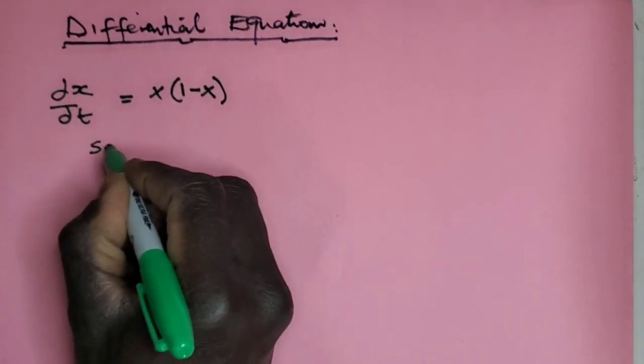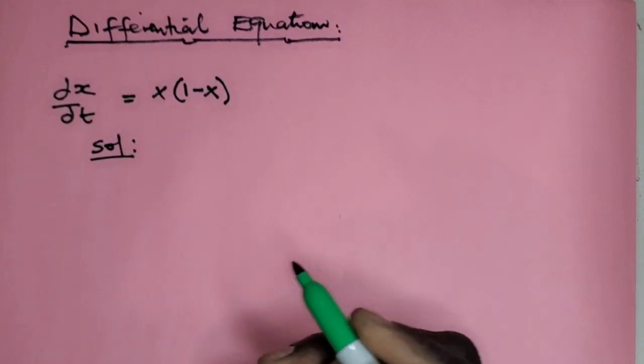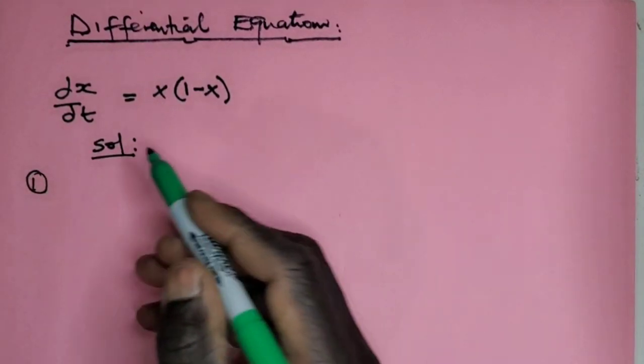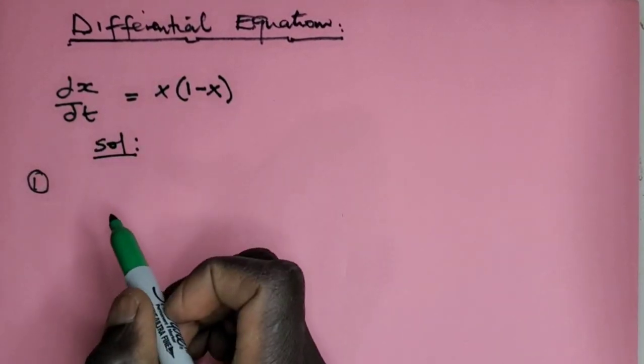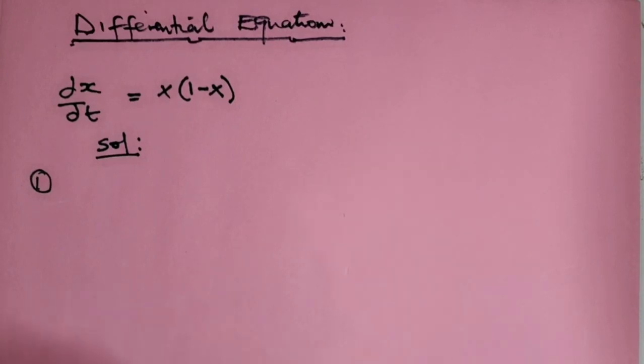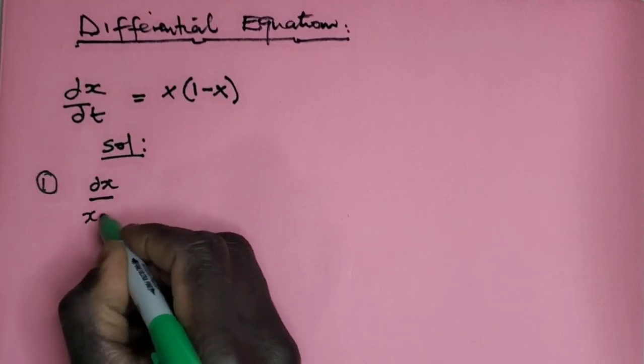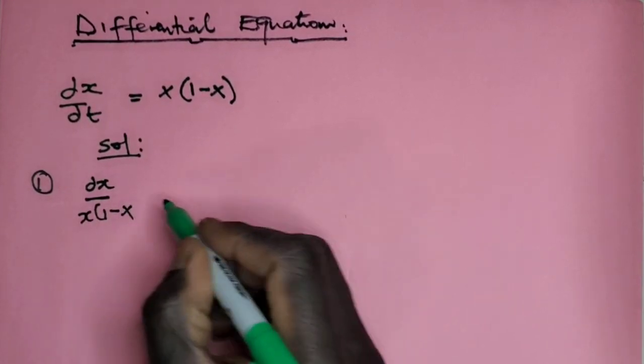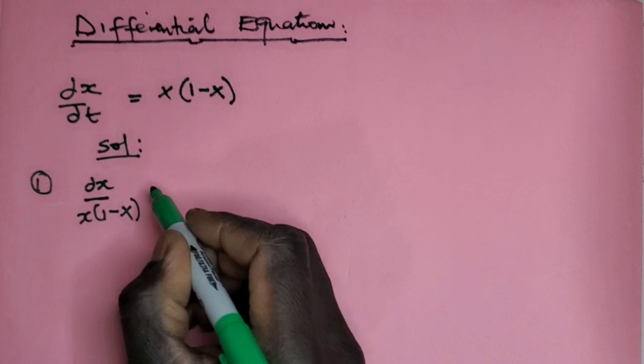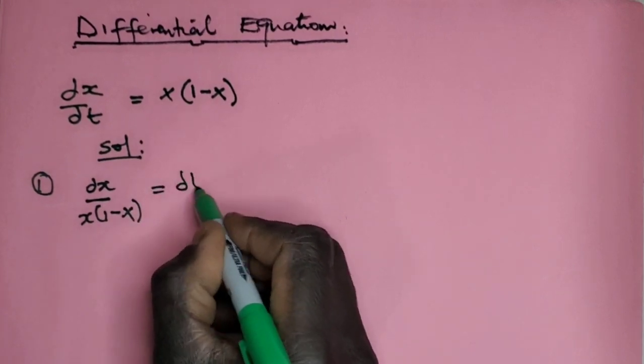Now the solution here will come in many steps. So one step is going to be separating the whole thing here. Take x to one side and dt to one side. So it's going to be dx over x(1-x) = dt.